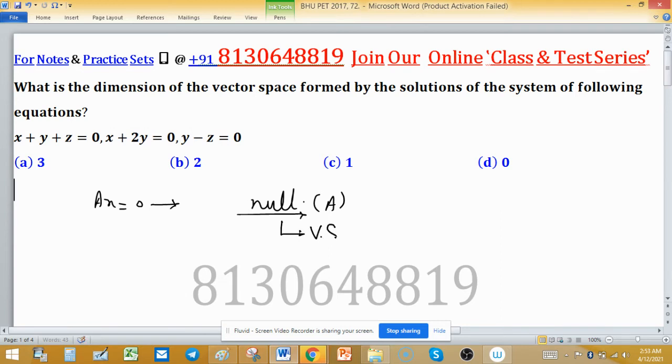This null space will form the vector space, and the dimension of this one is represented by eta.